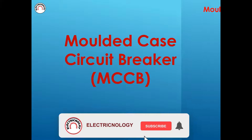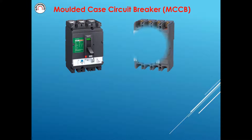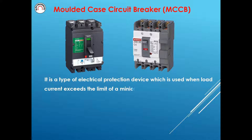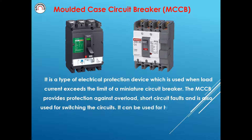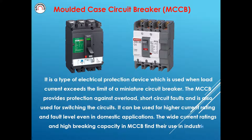Molded Case Circuit Breaker (MCCB). An MCCB is a type of electrical protection device which is used when load current exceeds the limit of a miniature circuit breaker. The MCCB provides protection against overload and short circuit faults, and is also used for switching the circuits. It can be used for higher current ratings and fault levels even in domestic applications. The wide current ratings and high breaking capacity in MCCB find their use in industrial applications.